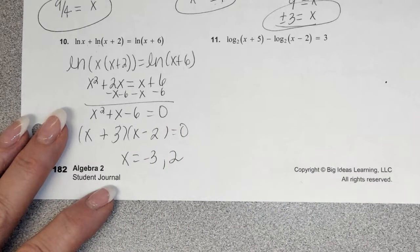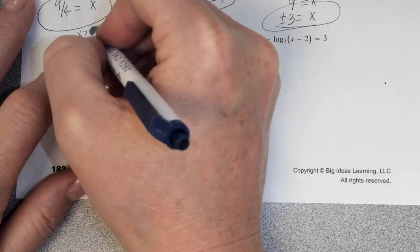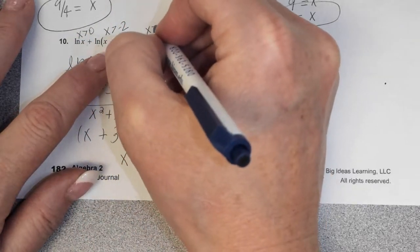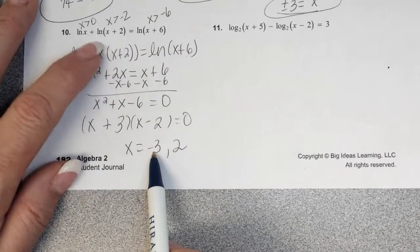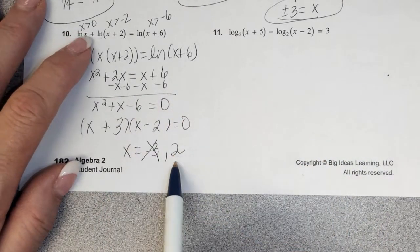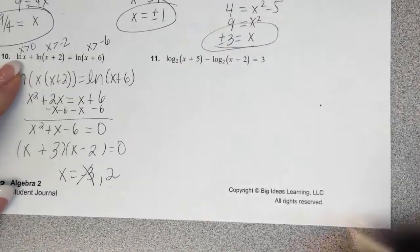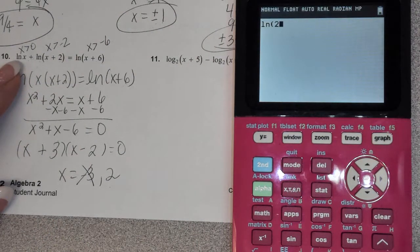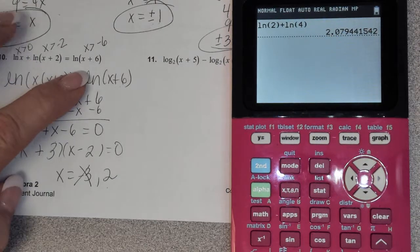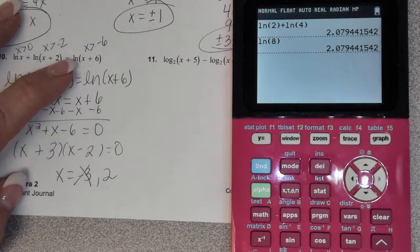Now I have to check those solutions. For x, the argument must be greater than 0; for x plus 2, x must be greater than negative 2. Does negative 3 meet those requirements? No — it's not greater than 0, so it's extraneous and not a solution. Does 2 meet all requirements? Yes. Checking on the calculator: natural log 2 plus natural log 4 equals natural log 8, which equals natural log of 2 plus 6. They are the same, so x equals 2 is confirmed.